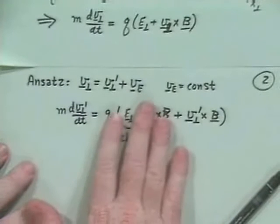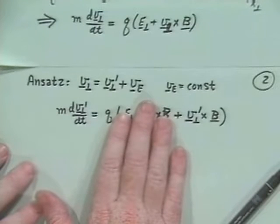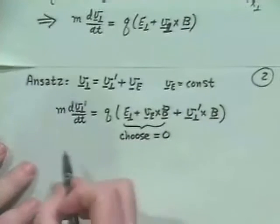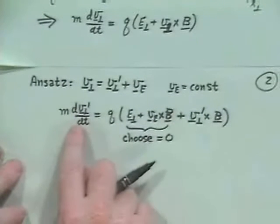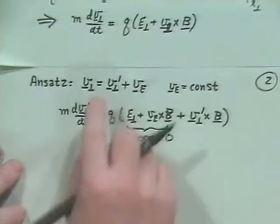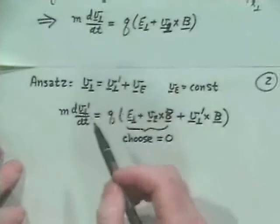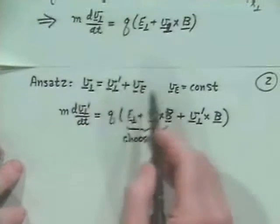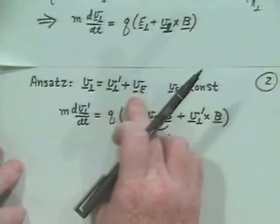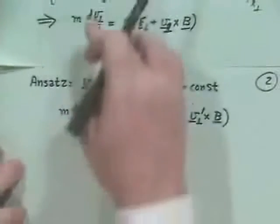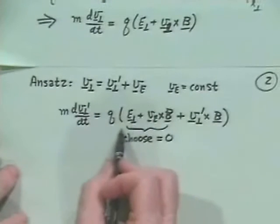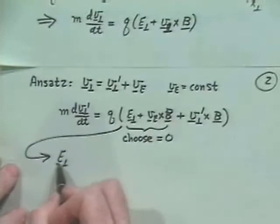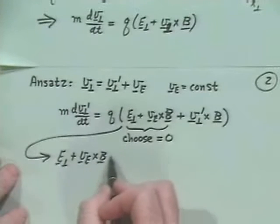We want to solve for the constant velocity V_E. Taking B cross the equation: E_perp cross B plus V_E cross B cross B equals zero. Using the back-cab rule, V_E cross B cross B becomes B cross B cross V_E, which equals minus B-squared times V_E_perp. Putting it all together: E_perp cross B minus B-squared V_E_perp equals zero.